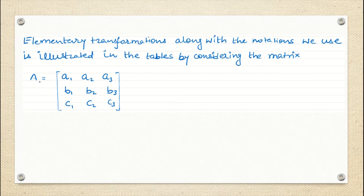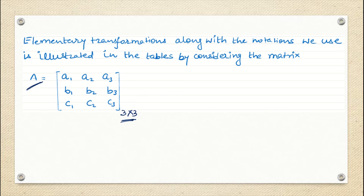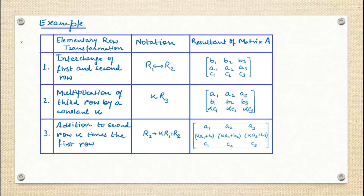Consider a general 3×3 matrix where the first row contains A1, A2, A3; the second row contains B1, B2, B3; and the third row contains C1, C2, C3. We are going to write down all elementary row operations in a tabular form, and similarly all elementary column operations in a tabular form, which will be helpful before your exam. Then we will perform those with numerical values.